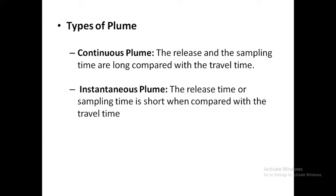Types of flume: flume can be classified into two types. One is continuous flume — continuously released from the source, with sampling time long compared with travel time. Example: smoke released from a stack. Instantaneous flume — release time and sampling time is short when compared with the travel time.